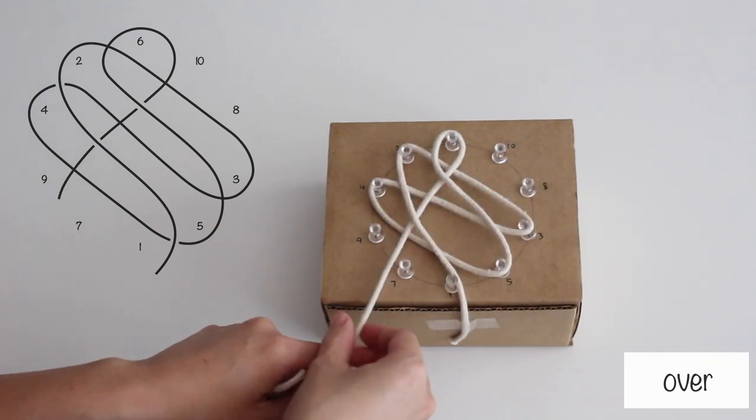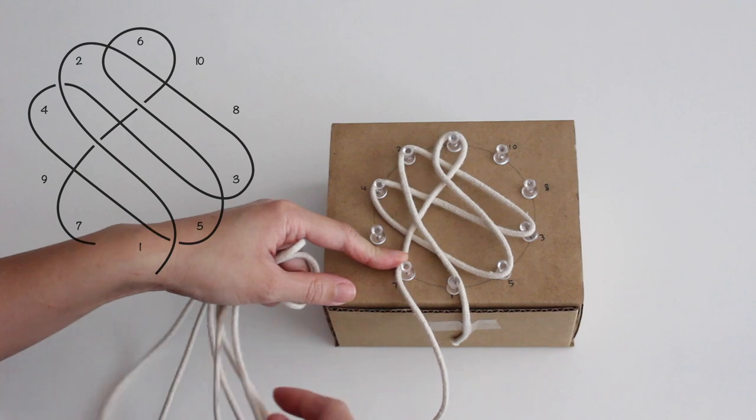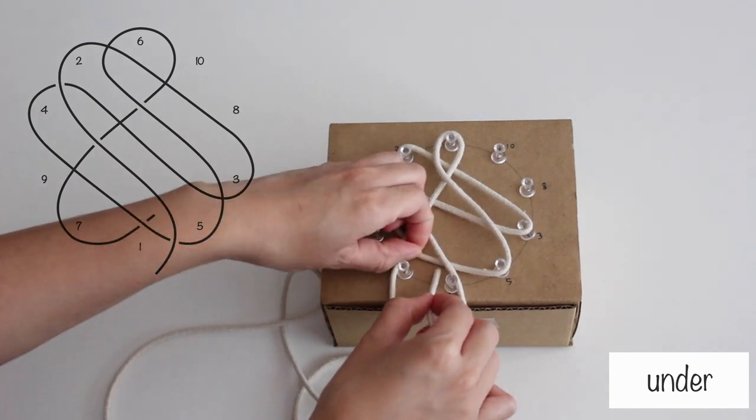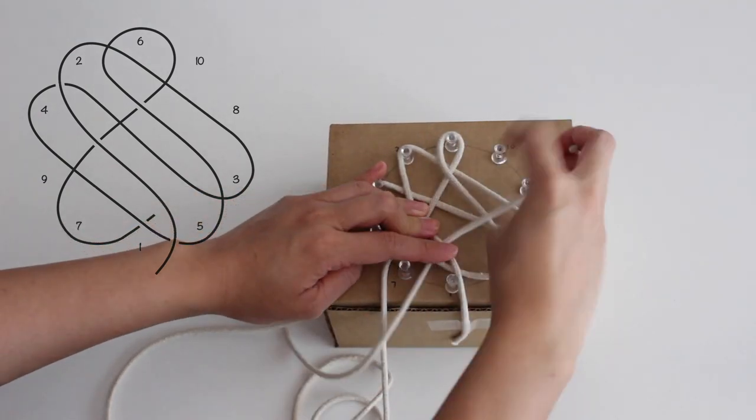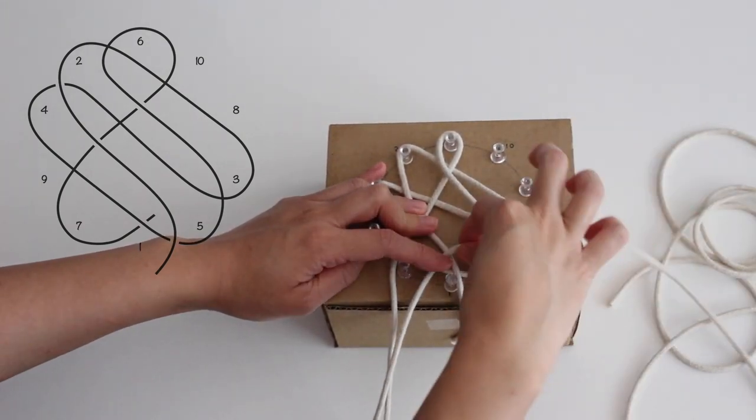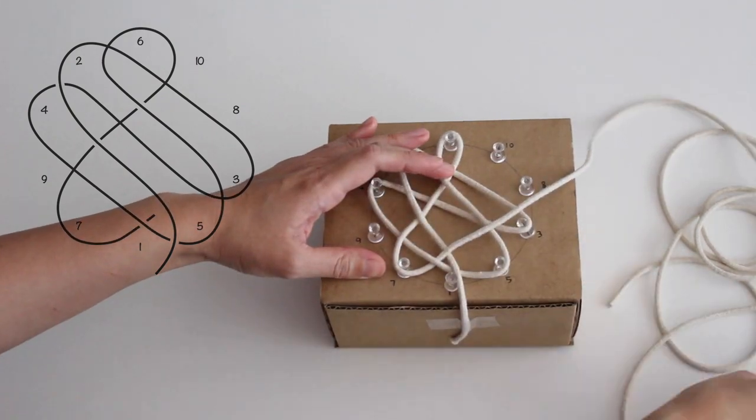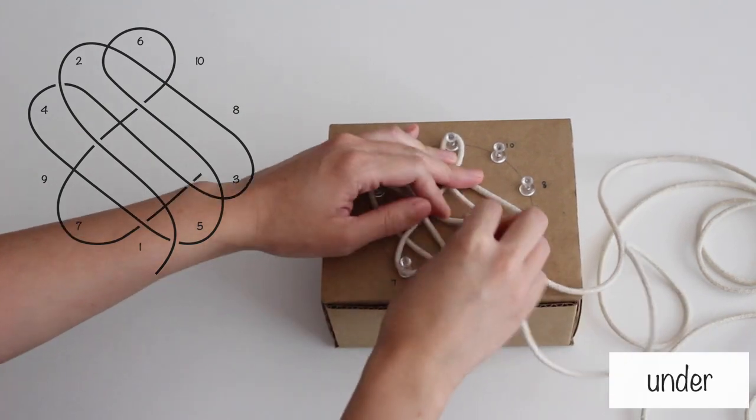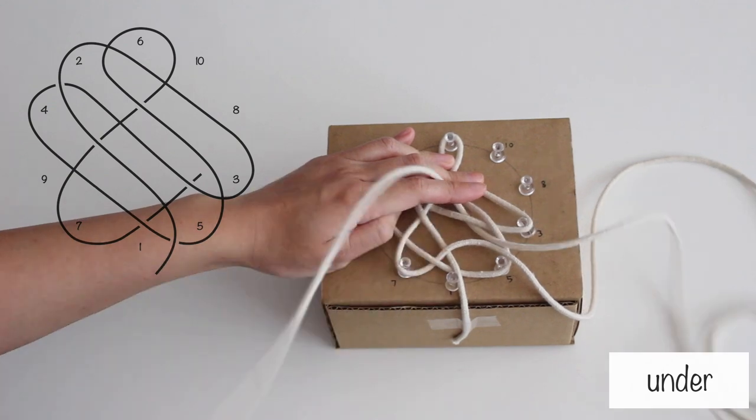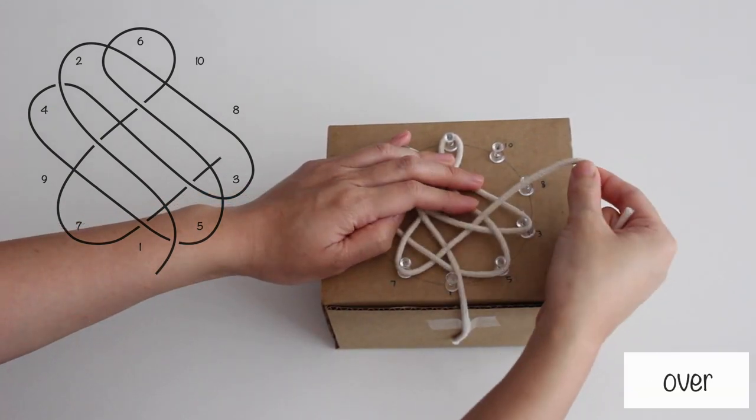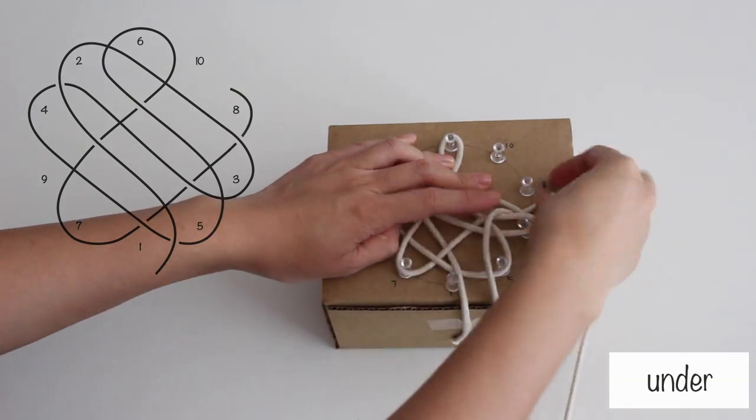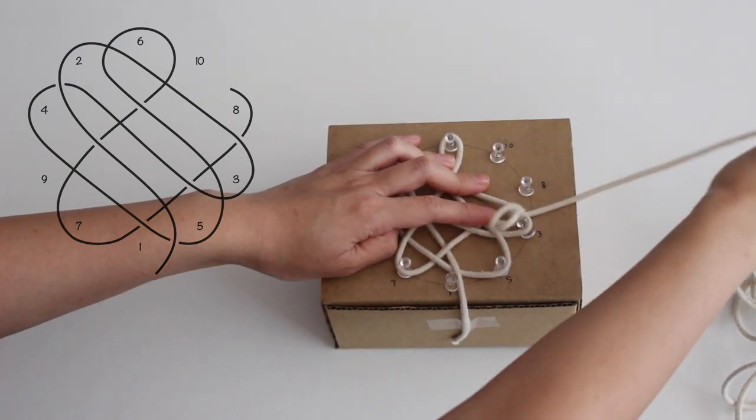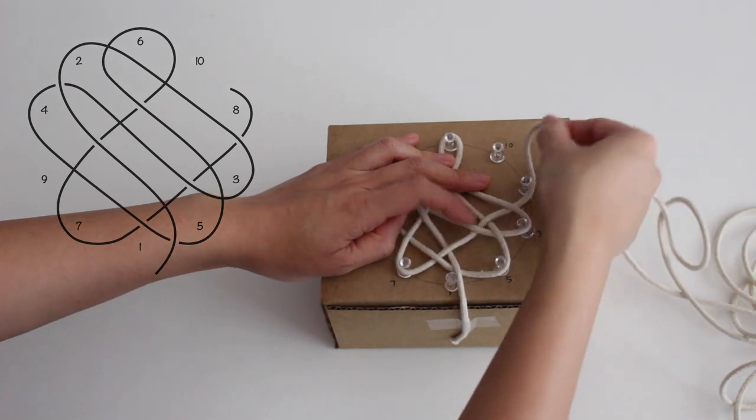Next, go over the cord and wrap it around number 7. Then go under, over, under, under, over, under, and wrap it around number 8.